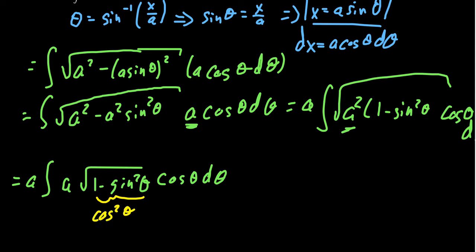For which that's a perfect square. The square root of cosine squared is equal to cosine. This thing would simplify to be an a squared times the integral of cosine times cosine d theta.